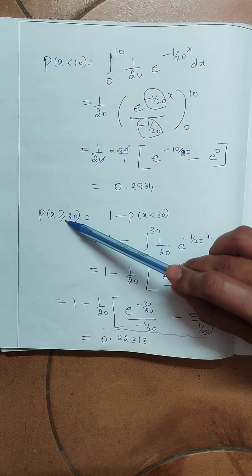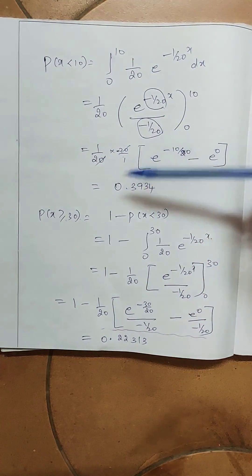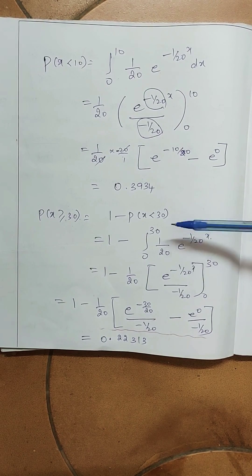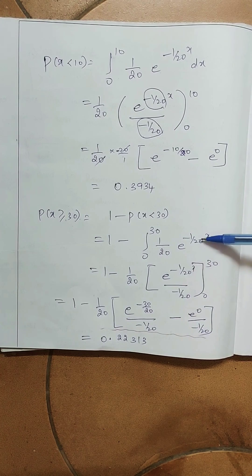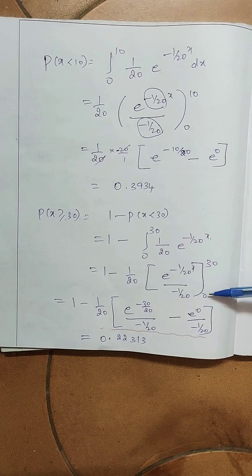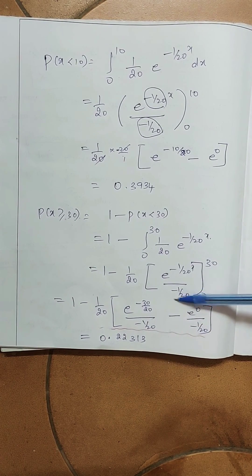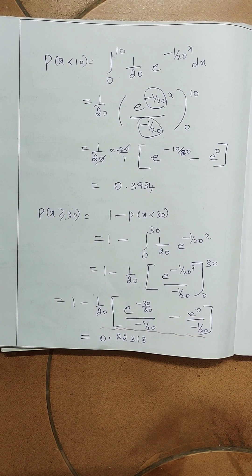For P(X ≥ 30), 'at least 30' means we integrate from 30 to ∞. Instead of integrating from 30 to ∞ directly, we write it as 1 − P(X < 30) = 1 − ∫₀³⁰ (1/20) e^(-x/20) dx. Integrating and applying limits: upper limit substitutes x = 30, giving e^(-30/20) = e^(-3/2); lower limit gives e^0 = 1. So P(X ≥ 30) = e^(-3/2). All problems in exponential distribution will clearly mention the distribution in the question. Thank you and all the best.